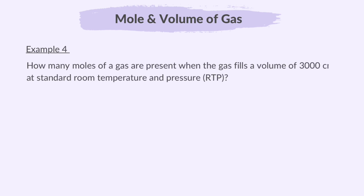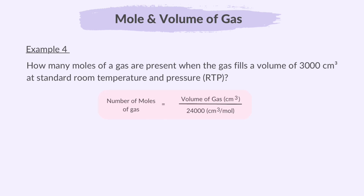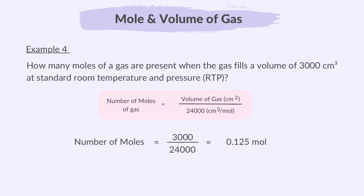In the next example, since the volume has been given in cubic centimetres, we use the formula: number of moles of gas = volume of gas ÷ 24,000. So, 3,000 ÷ 24,000 gives us 0.125 moles.